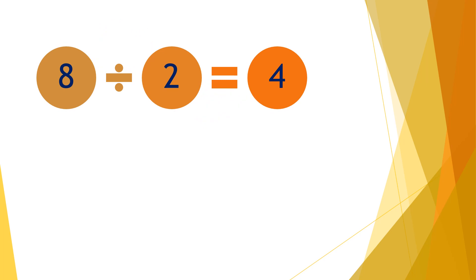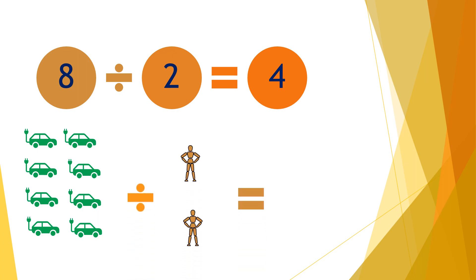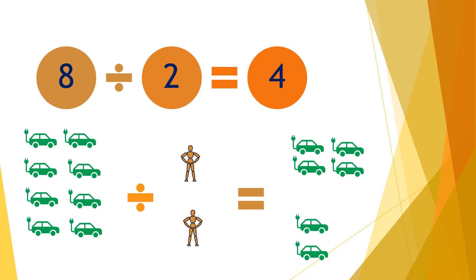Moving on to the next question: eight divided by two equals four. So if you have eight cars and divide them by two people, each person will receive four cars.